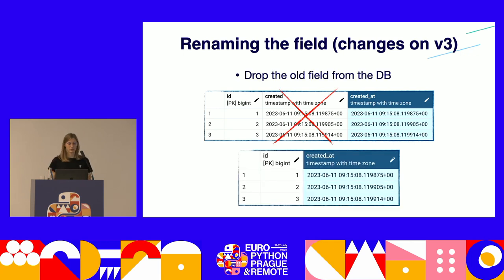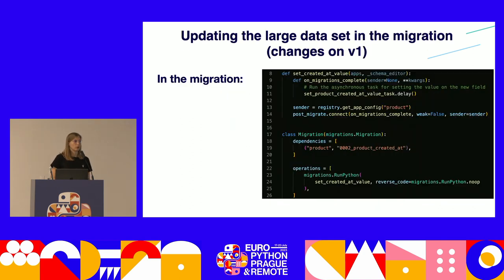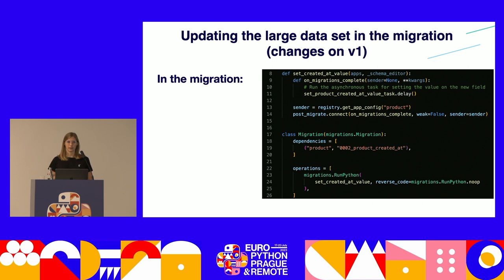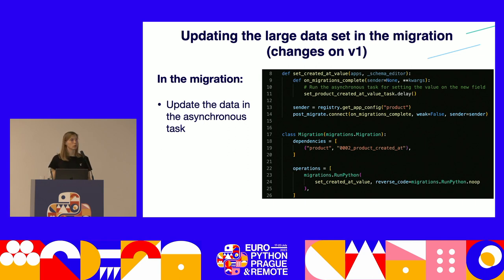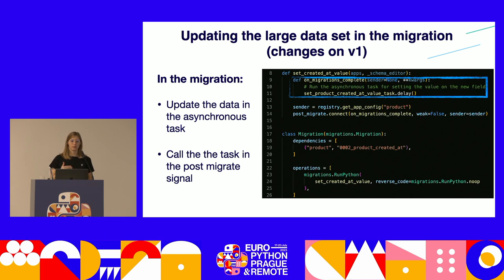Now let's handle updating large datasets. The update should be done in the version before the target version, so we can be sure all existing instances will have proper values set before safely applying changes on the target version. To minimize migration time, data should be updated asynchronously after the migration process. Here's an example migration that triggers a task which copies data from the old created column to the new created_at column. The task is triggered in a post-migration signal, meaning it runs after migrations are completed so it doesn't interfere with the migration process, and the data is copied in the background.